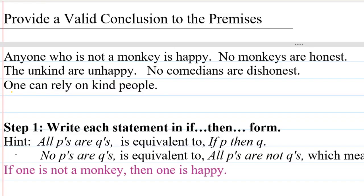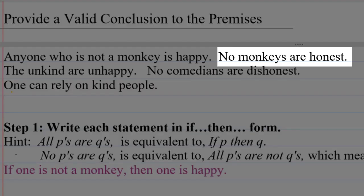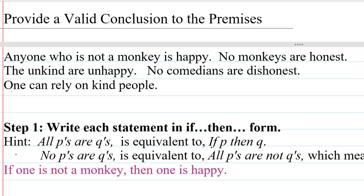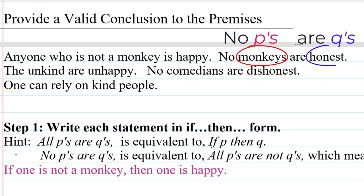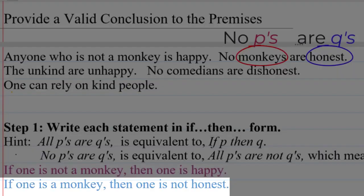Now let's look at 'no monkeys are honest.' This is a 'no P's are Q's' situation where P is the characteristic of being a monkey and Q is the characteristic of being honest. So this translates into 'if P then not Q': if one is a monkey, then one is not honest.